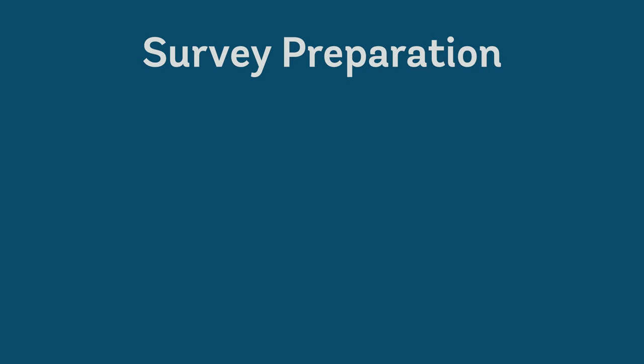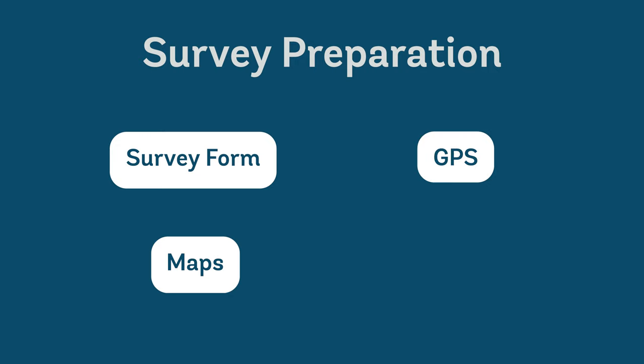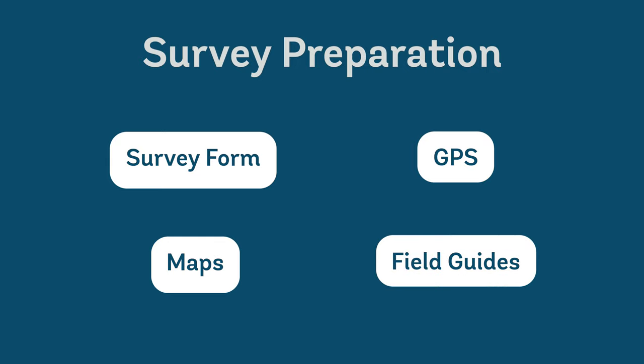Survey preparation: gather some basic equipment — a copy of the survey form, some maps to annotate, and a weather writer or case to keep dry. GPS is very useful, especially for accurately recording remnant features, and you might want some field guides to help identify plants, for example.